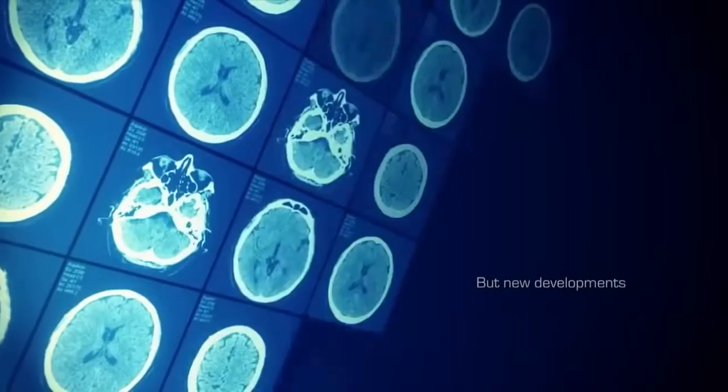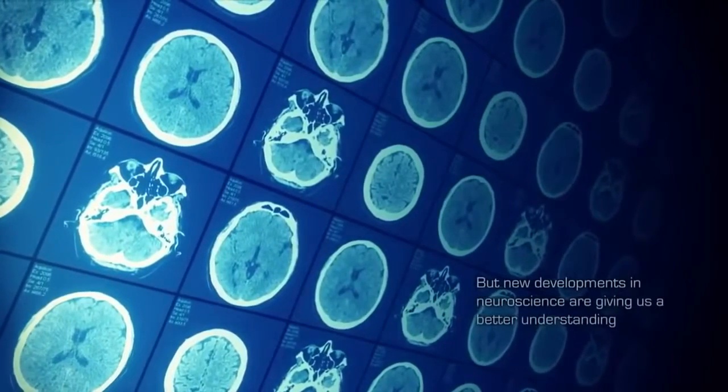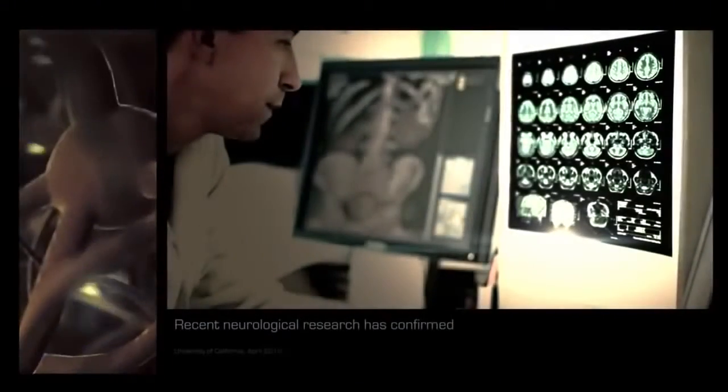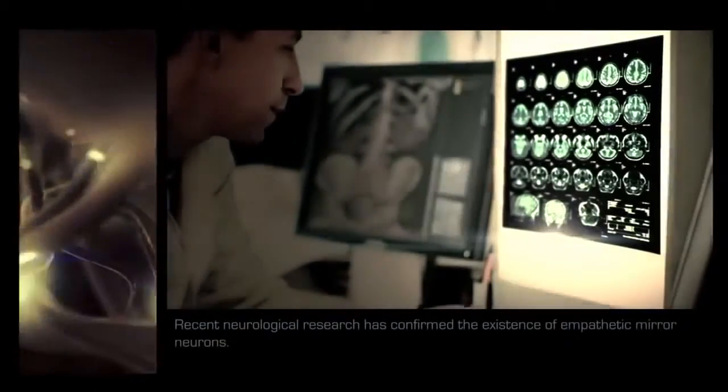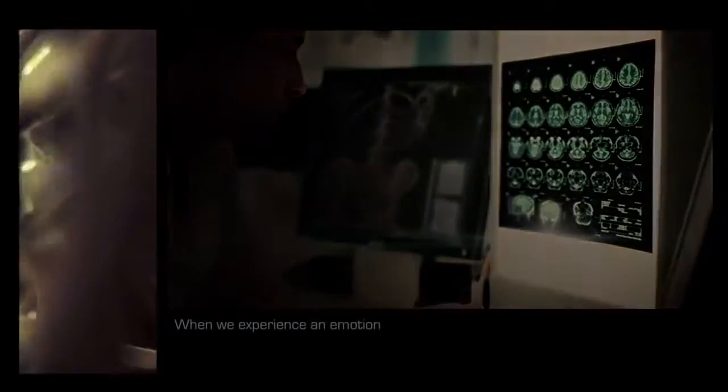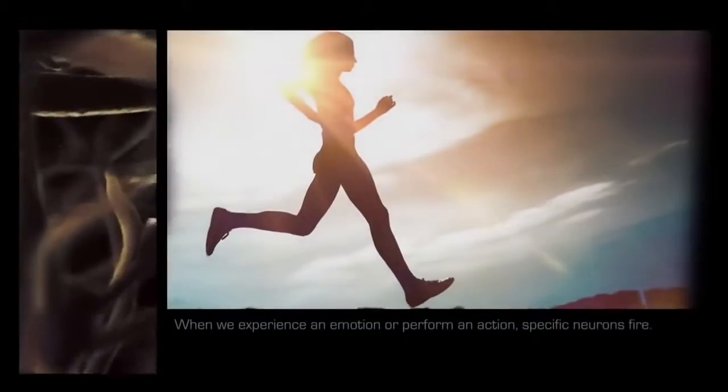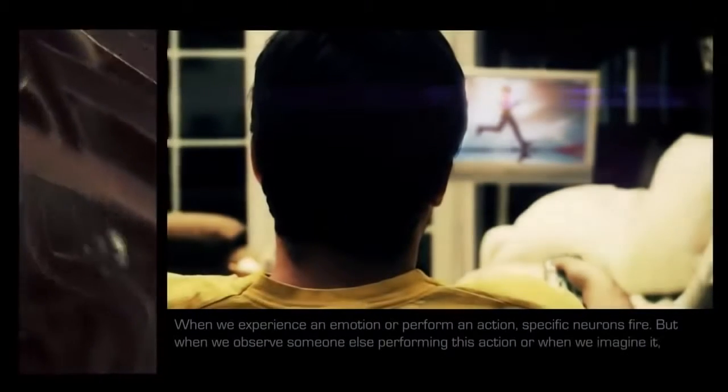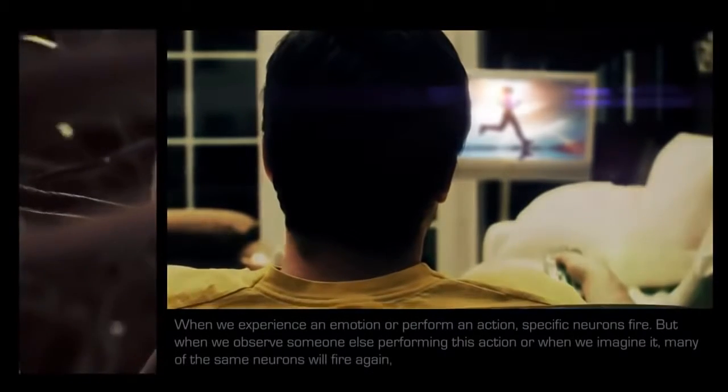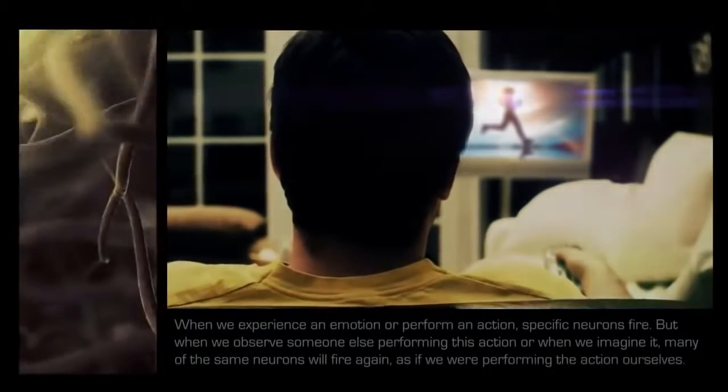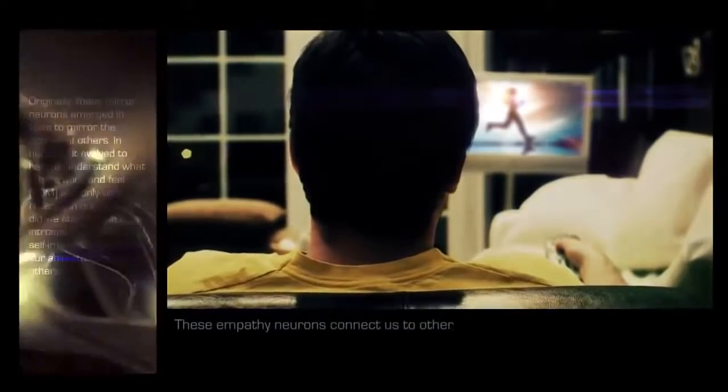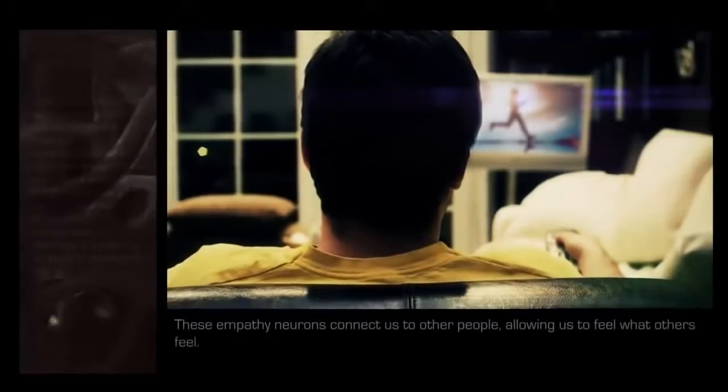But new developments in neuroscience are giving us a better understanding of culture and identity. Recent neurological research has confirmed the existence of empathetic mirror neurons. When we experience an emotion or perform an action, specific neurons fire. But when we observe someone else performing this action, or when we imagine it, many of the same neurons will fire again, as if we were performing the action ourselves. These empathy neurons connect us to other people, allowing us to feel what others feel.